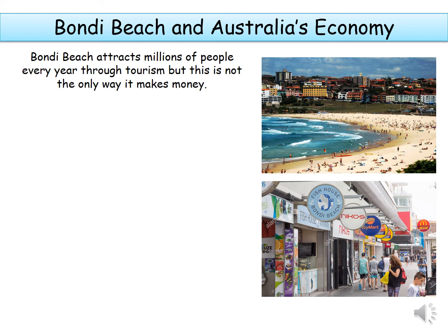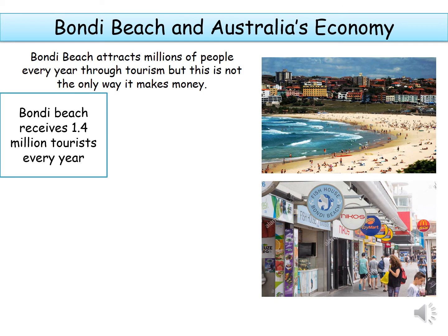The second part of the lesson is all about how Bondi Beach helps Australia make money — we're going to use the word 'economy.' Bondi Beach must attract millions of people every year through tourism. Number one: Bondi Beach receives 1.4 million tourists every year. They have to stay in hotels, buy souvenirs, go to restaurants and eat, and may go to bars. So that makes lots of money for the area.